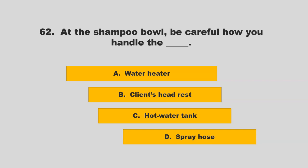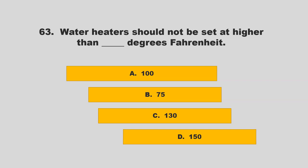At the shampoo bowl, be careful how you handle the blank. Options: water heater, client's headrest, hot water tank, or spray hose. The correct answer is D: spray hose.